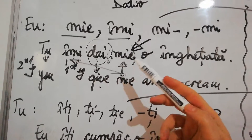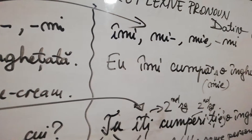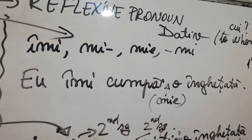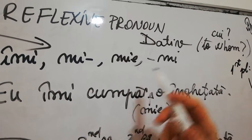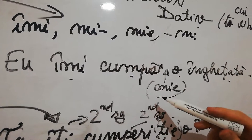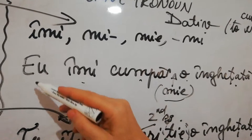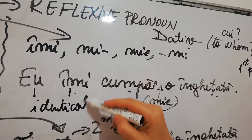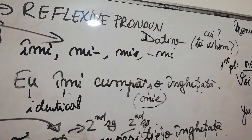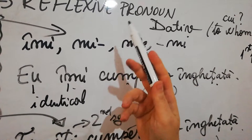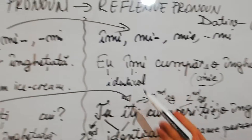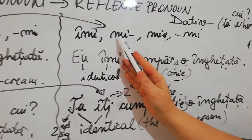Now, what if I buy myself an ice cream? The pronoun becomes reflexive because I do the action to myself. To whom do I buy the ice cream? To myself. So 'eu îmi cumpăr o înghețată' - 'mie' is not mandatory but you can use it for focus. The reflexive pronoun has no proper form here, so it borrows the form from the personal pronoun - like a little brother asking for help.